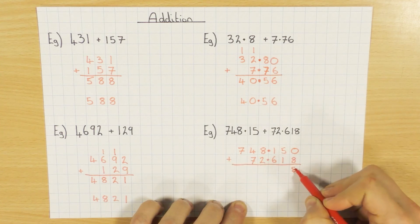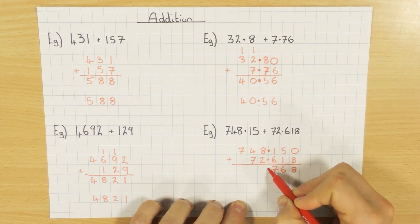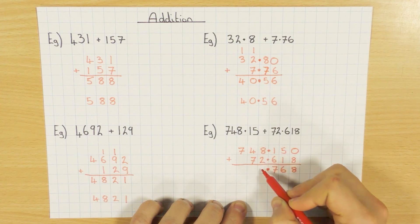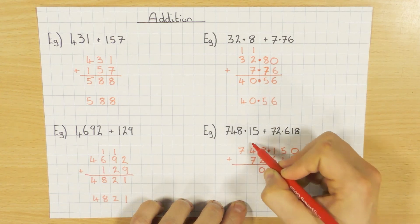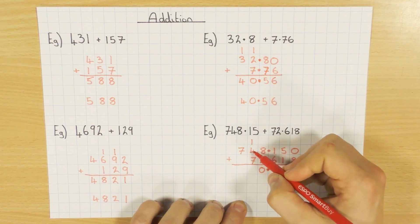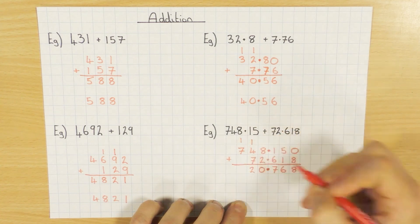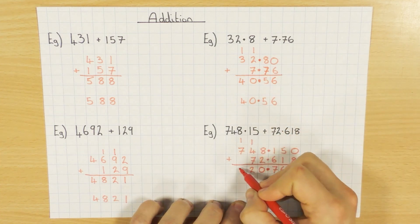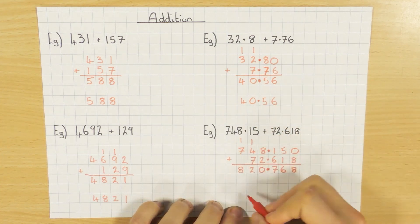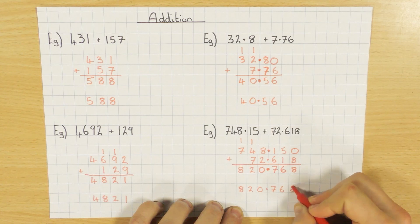0, add 8 is 8. 5, add 1 is 6. 1, add 6 is 7. Decimal points. 8, add 2 is 10. So there's my 0, carry the 1. 1, add 4 is 5. Add 7 is 12. So 2, carry the 1. And then finishing it off with 1, add 7 is 8. So 820.768.